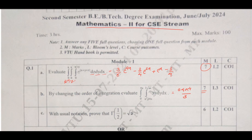With usual notation, prove that gamma of 1/2 is equal to root pi. It is a standard derivation — I have solved this derivation in my previous video. You can refer to that video to know the perfect answer. It carries 6 marks.